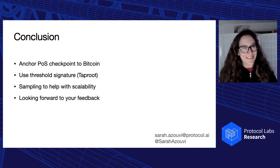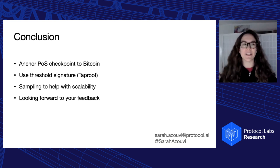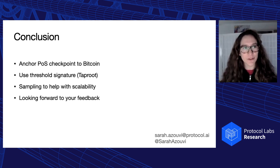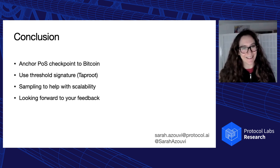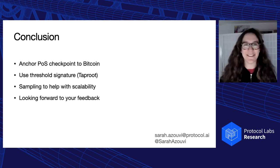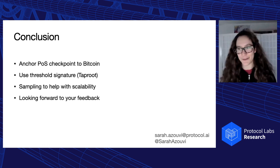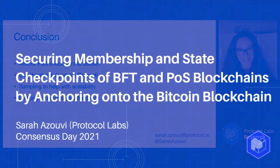So basically, this is a work in progress. So we are happy, there's a Q&A just after. So we are really happy to discuss this with you. So just to conclude, this is the end. The idea of this project is to anchor a proof-of-stake of proof-of-state checkpoint to the Bitcoin blockchain to use threshold signature and to leverage tap route. We are thinking about using sampling to help with scalability. And we are really happy to hear your ideas. If you know signing schemes that are good to use, feel free to reach out to me. And I think, and yeah, there's my email address and my Twitter. So feel free to reach out to me and I'm looking forward to the Q&A. Thank you.